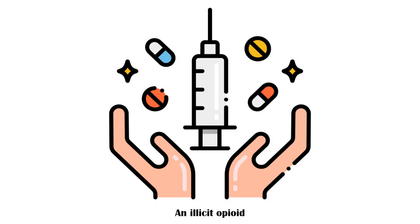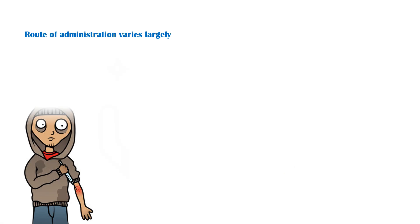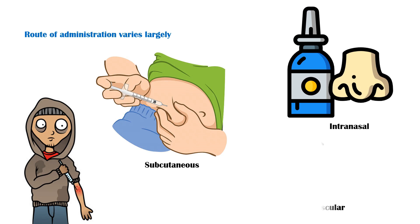The route of administration of heroin varies largely, with the intravenous route being the most common. Other routes include subcutaneous, intranasal, and intramuscular.